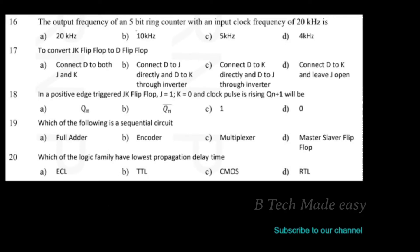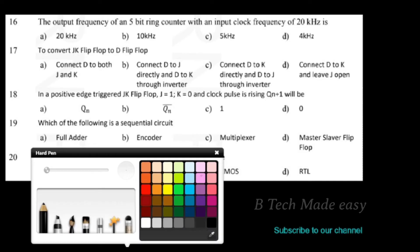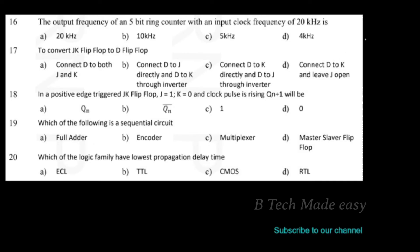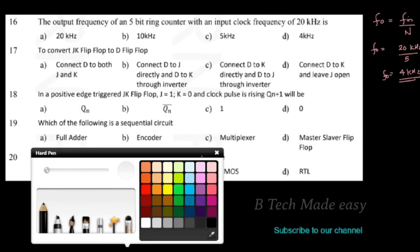Next question: the output frequency of a 5-bit ring counter with an input clock frequency of 20 kHz. The equation is: output frequency = input frequency ÷ n = 20 kHz ÷ 5 = 4 kHz. That is Option D.